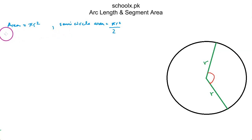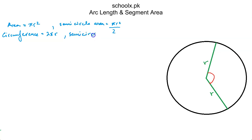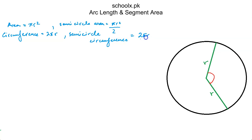The circumference of a circle is 2πr. The circumference of a semicircle is 2πr divided by 2, which gives us simply πr.